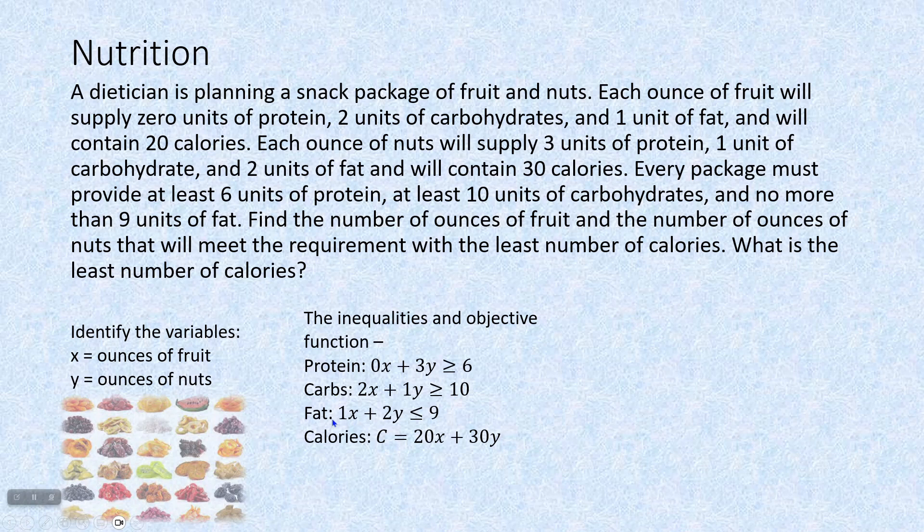Fruit and nuts, fruit has one unit of fat, nuts have two units of fat, and it needs to be no more than, or less than or equal to, right? No more than. It could be smaller, but nine is the biggest for fat, nine units of fat. And our calories equation, 20 calories for each ounce of fruit, plus 30 calories for each ounce of nuts.